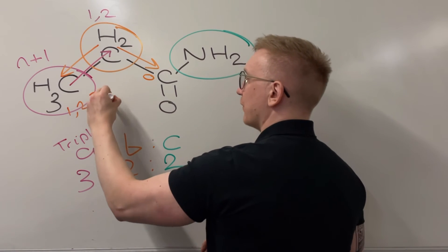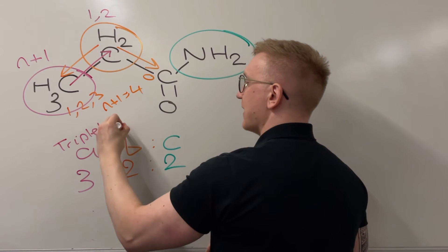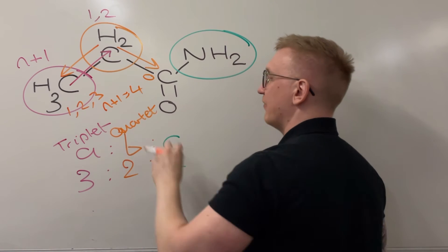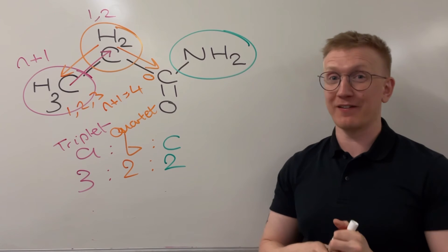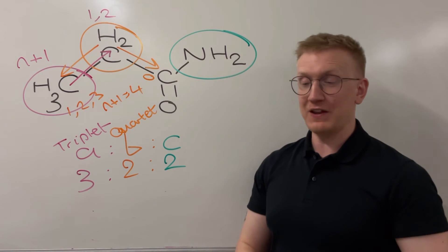Because that's going to be n plus 1 is 4, and so we expect a quartet for environment B on our hydrogen NMR spectrum.